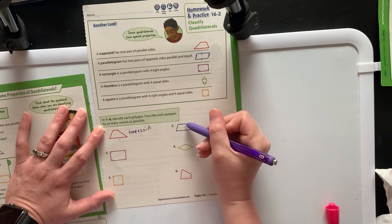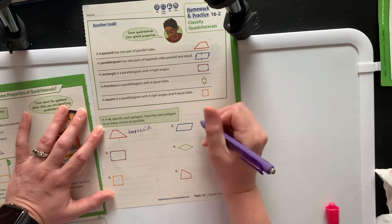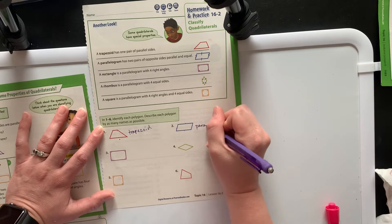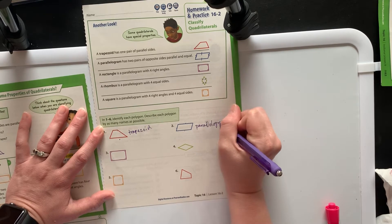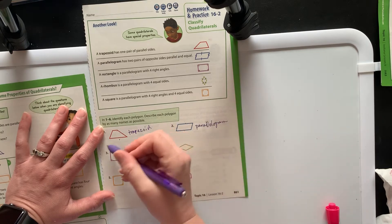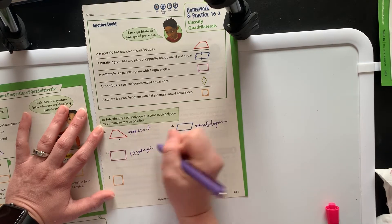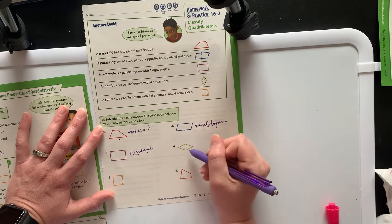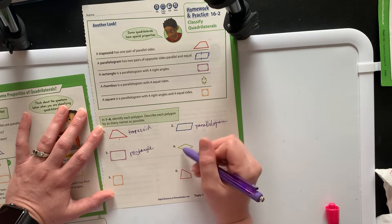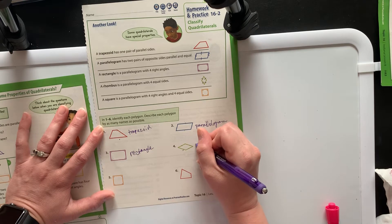This line—I see we have a line parallel and a line parallel, two sets of parallel lines—that makes this a parallelogram. Moving on to this one, clearly a rectangle. This one, I see sides are parallel and sides are the same length. That makes this a rhombus.